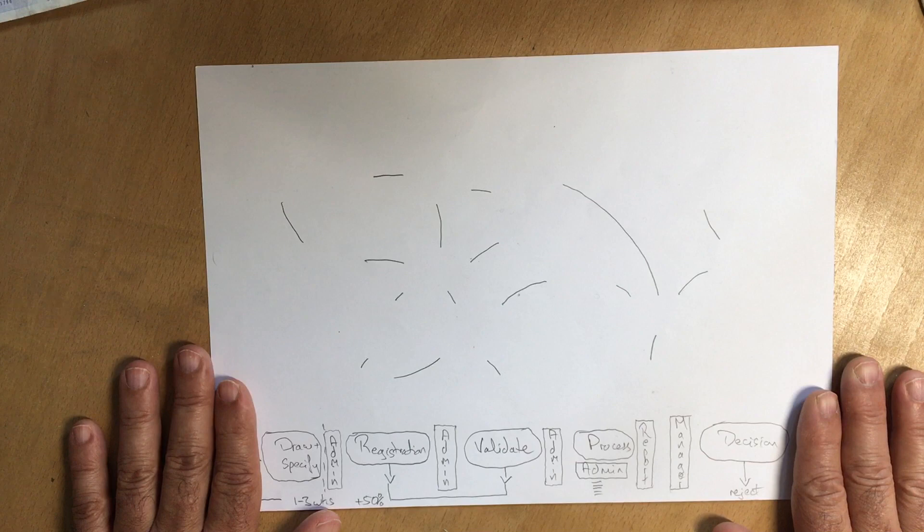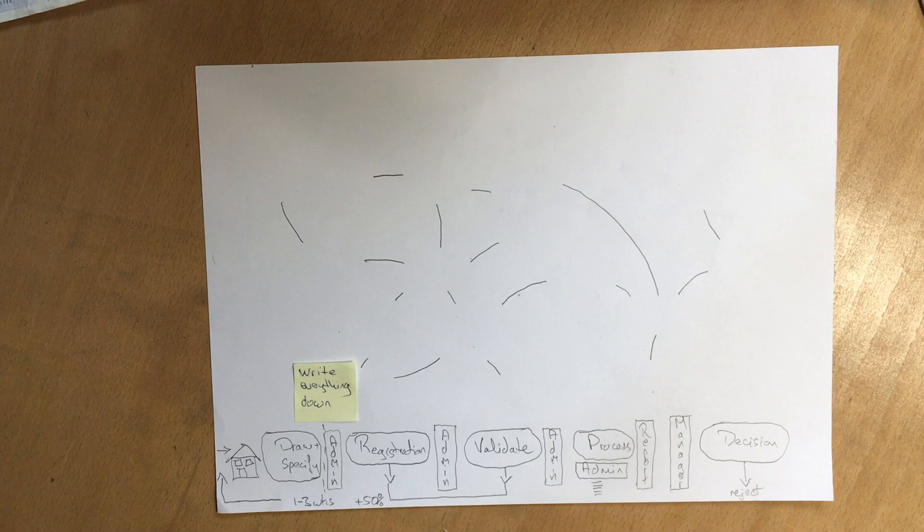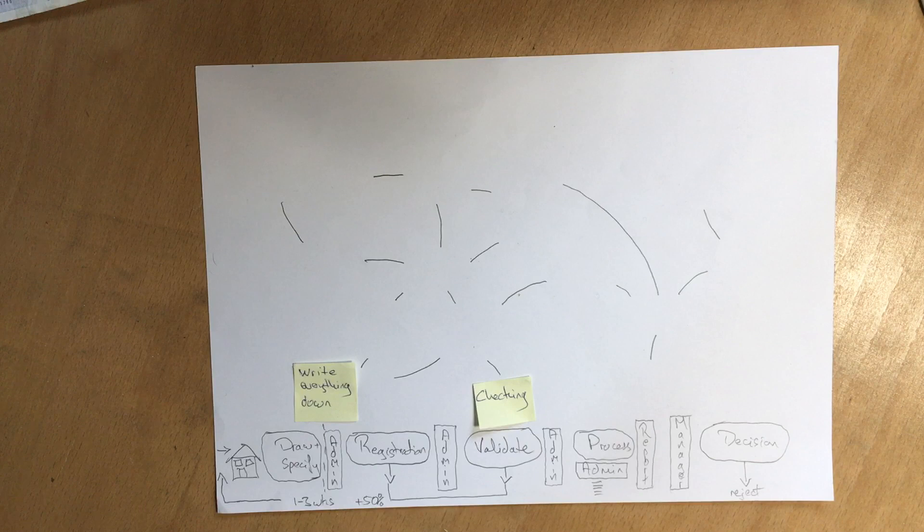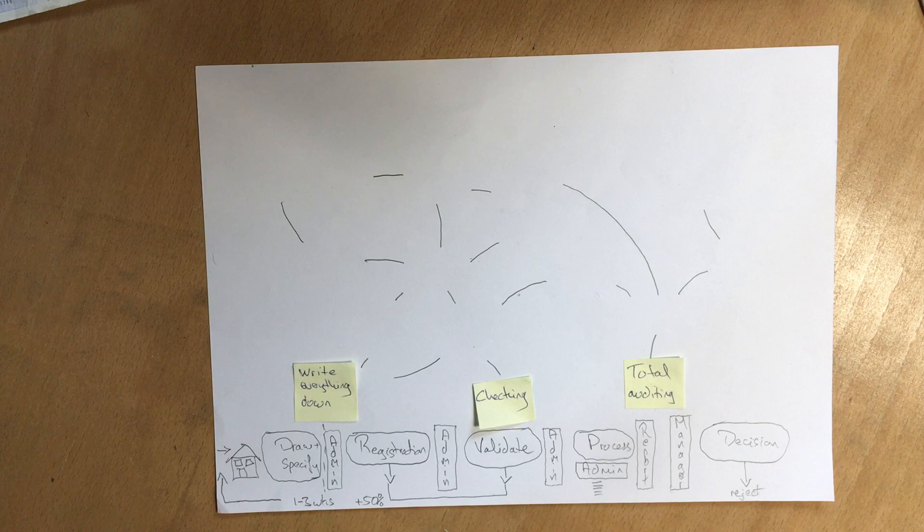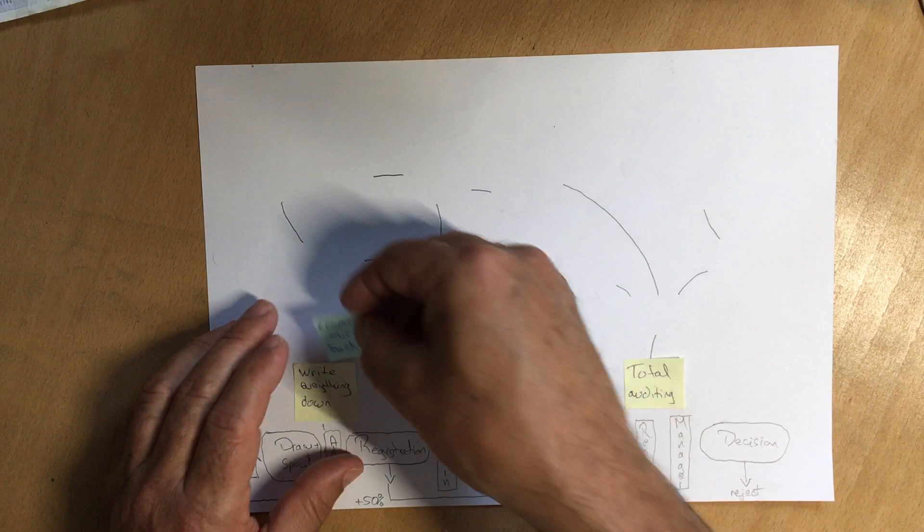And where we started from is we started with, well the first things that we do is we write everything down and then we do lots of checking. We make sure that we audit everything all the time. And the writing everything down, where did that come from? That's interesting because the reason that we do that is that we've got to cover our backs. We've got to make sure that we don't get criticized.